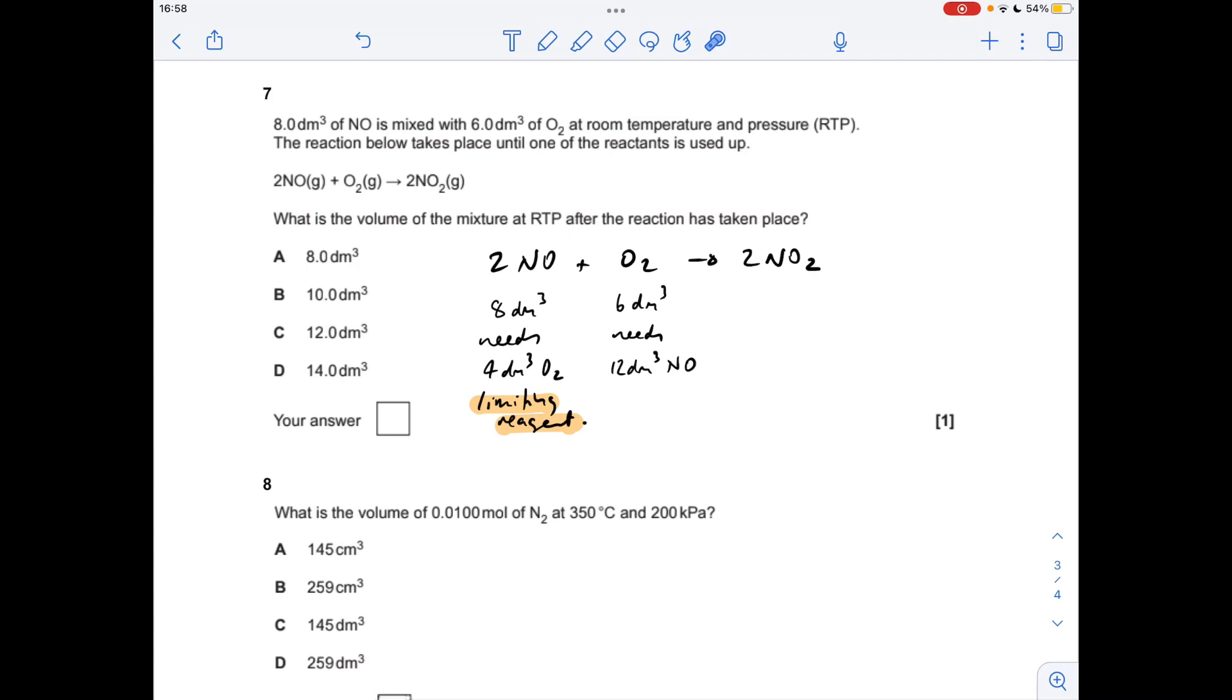Moving on to number seven now, so I think this is quite tricky this one. The first thing I'm going to do is work out which is the limiting reagent, which chemical is going to fully react. So if I start with the oxygen, 6 decimeters cubed of oxygen is going to need twice as many decimeters cubed of NO, so 12, but we've only got 8, so not all of that oxygen is going to react, so obviously this is in excess. Just do the same for the NO just to make the point.